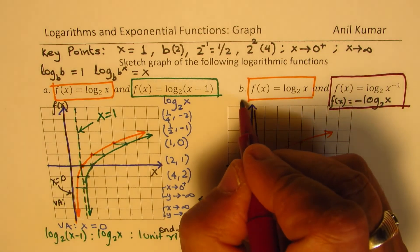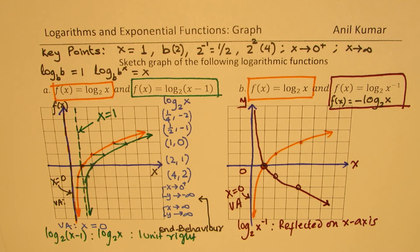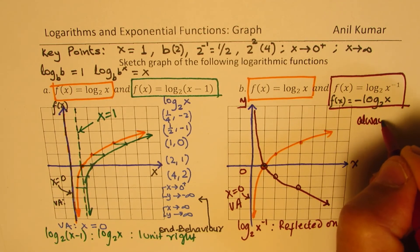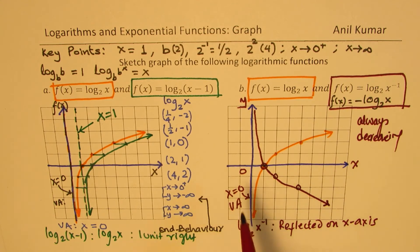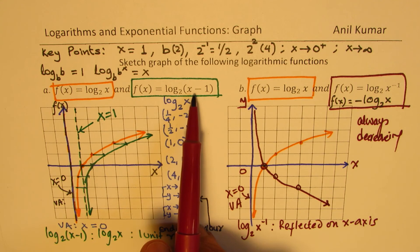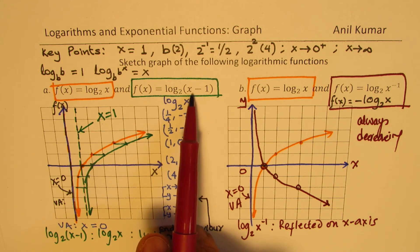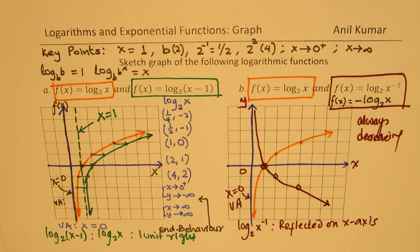Domain and range remain the same for the reflected function: domain is all real numbers greater than 0, and range is all real numbers. In the previous case — the horizontal shift — the domain changed since we shifted one unit to the right. So a horizontal translation changes the domain, but vertical translations or reflections do not change the domain. Range remains all real numbers for these transformed functions.